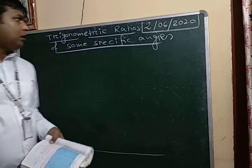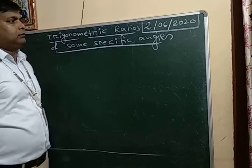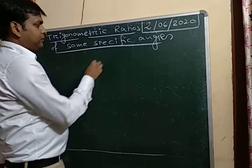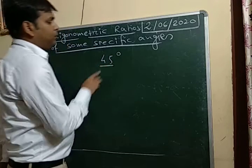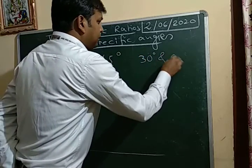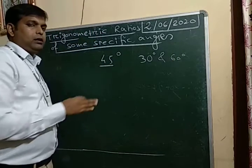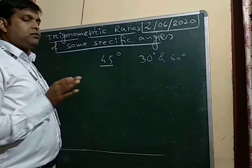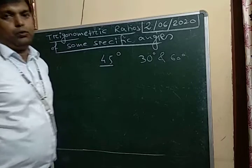Good morning dear students. In the last class I discussed trigonometric ratios of some specific angles — how to find the values for 45 degrees, 30 and 60 degrees. I also sent one table and I told you today I am going to show you how to remember or how to make that table. The table is very important and you have to remember it. So let's see the table.